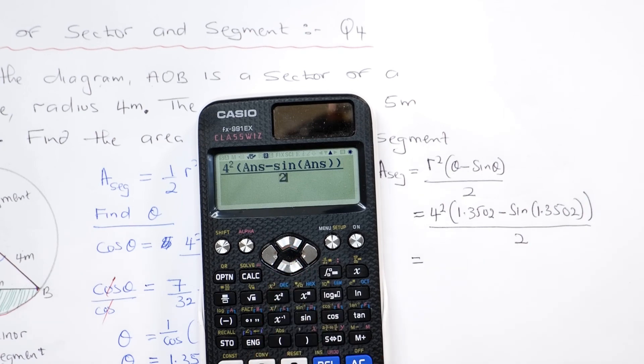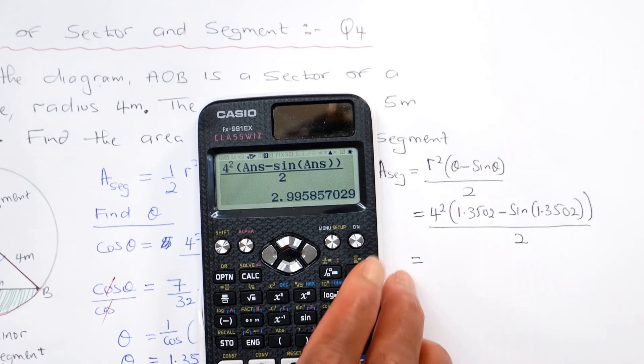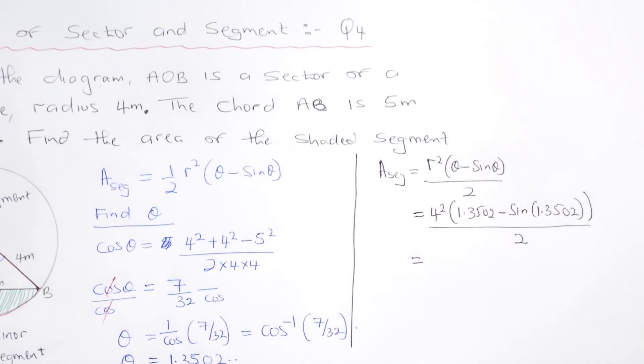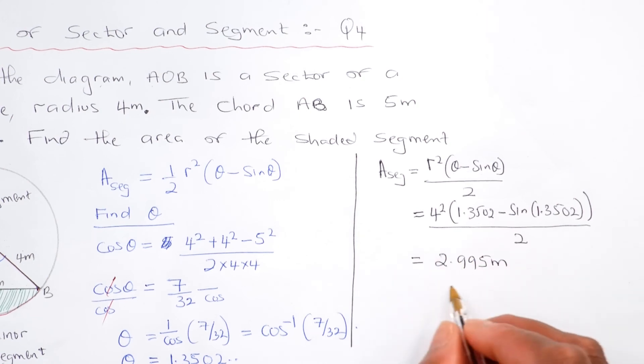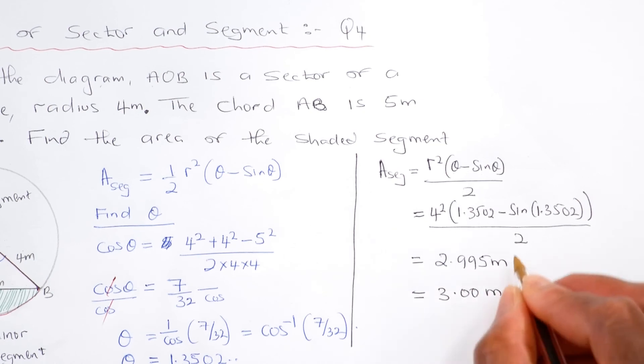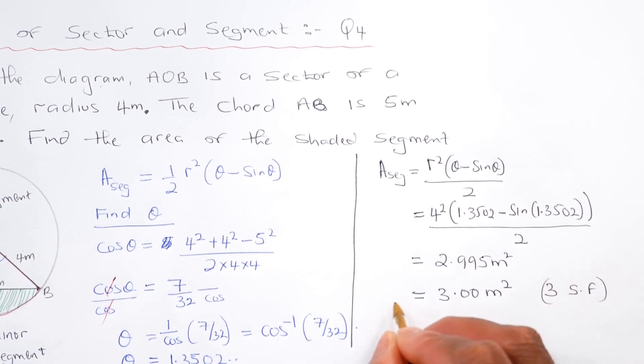I get 2.995, so that will be 2.995. And to write down three significant figures, that will become 3.00 meters squared, that's to three significant figures.